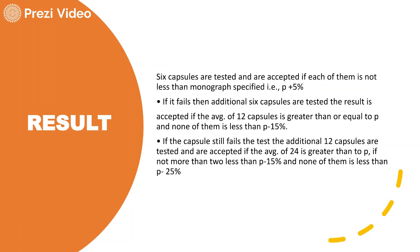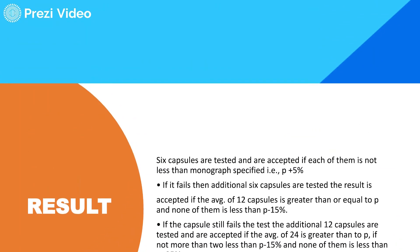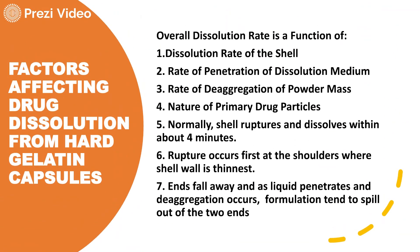If that criteria is also not fulfilled, an additional 12 capsules are taken. They are accepted if the average of 24 is greater than Q, not more than two are less than Q minus 15%, and none is less than Q minus 25%. The interpretation criteria for dissolution remain the same as for plain uncoated tablets.